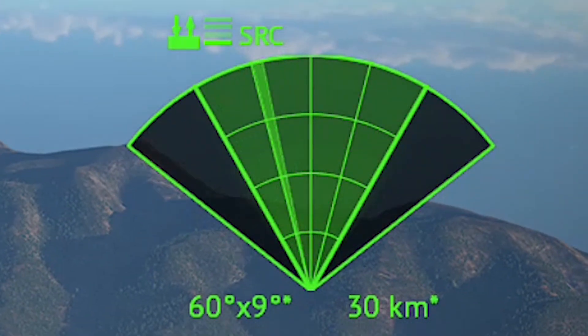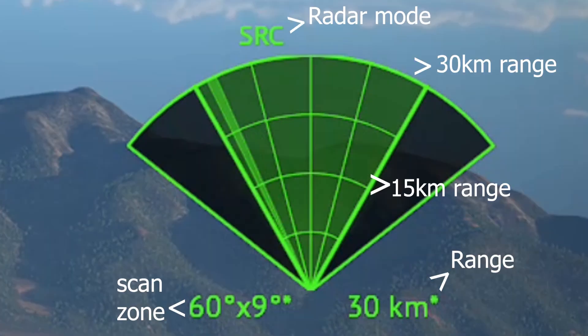Here we have the PPI scope, which stands for Plan Position Indicator — basically a top-down view of the radar scope. We have a max range of 30 kilometers at this altitude, and a scan zone of 60 by 60 degrees. Each curved line represents a range ring: the top line is 30 km, the middle is 15 km, and the bottom is zero. Between those lines it's about 7 or 22.5 kilometers.